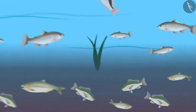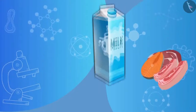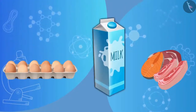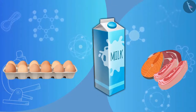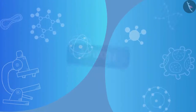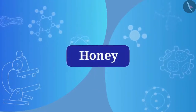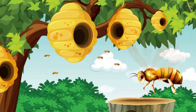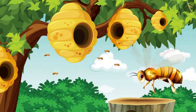So far we have learned that we get meat, milk, and eggs from animals. But we also get honey from animals. Honey is obtained from bees, and for this reason honey is also considered an animal product.